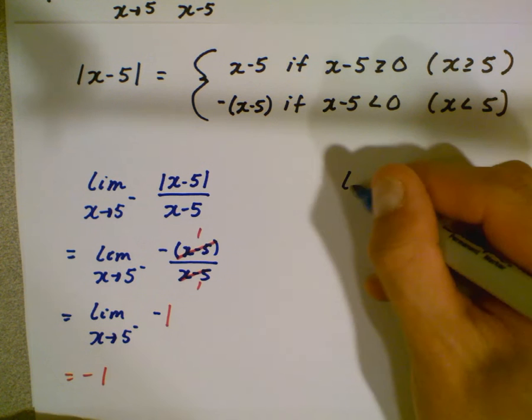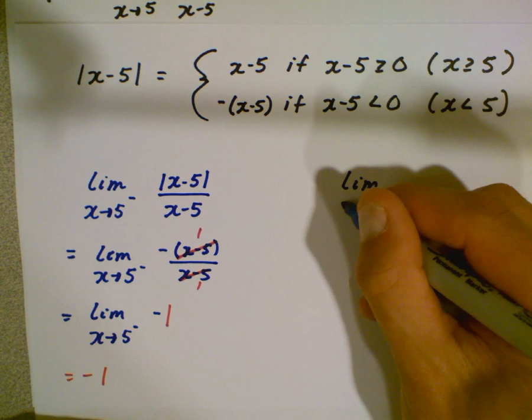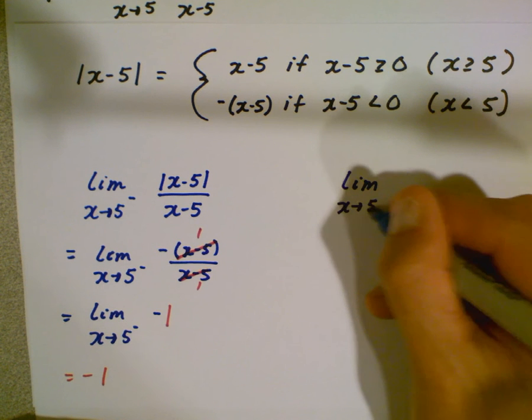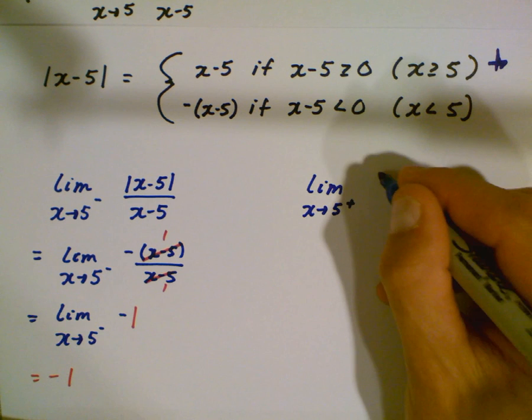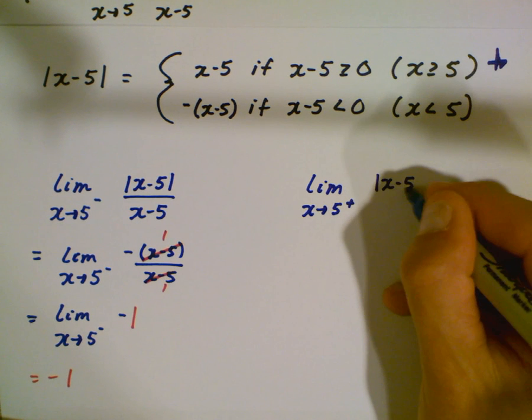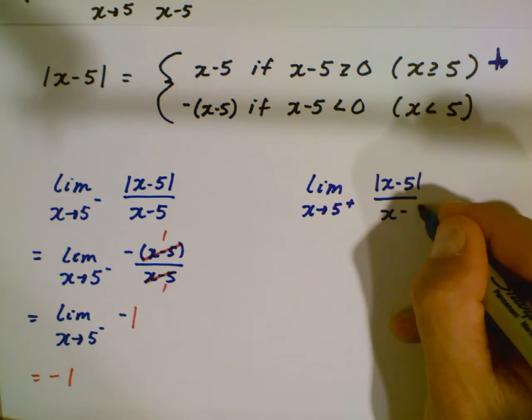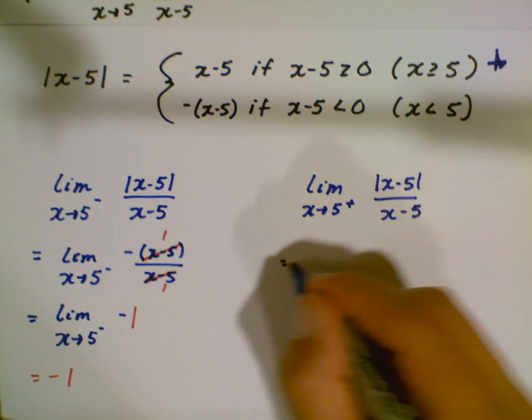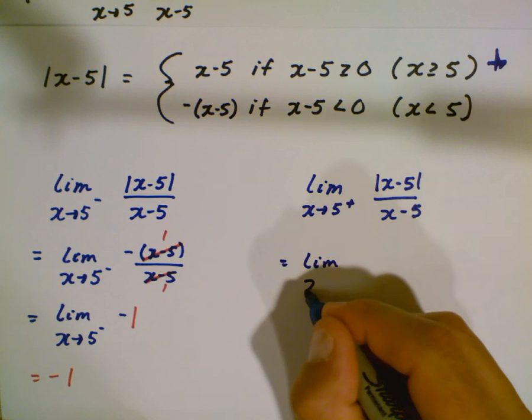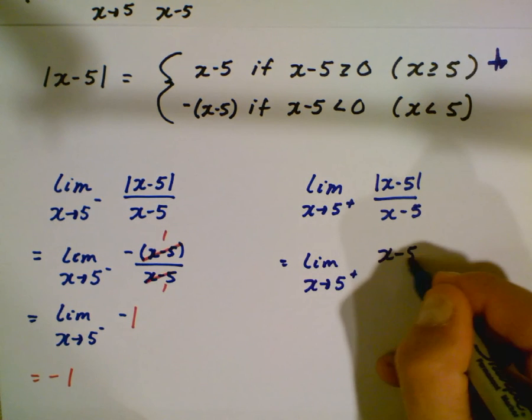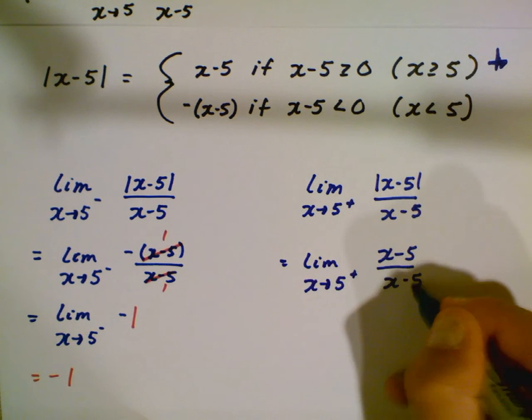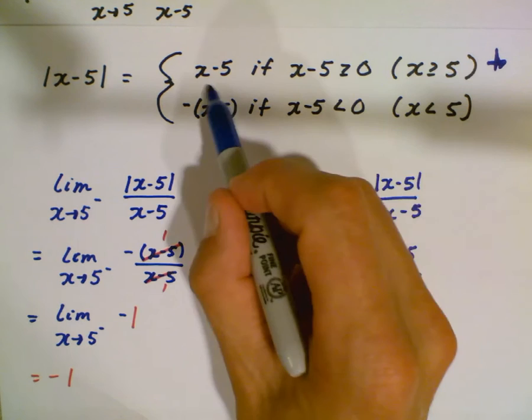We have to actually approach 5 from the positive side, from the right. So as x approaches 5 from the right, that means we're going to be using this portion. You're going to have the original, I'm just rewriting the original here. And if I simplify this I'm going to have the limit as x is approaching 5 from the right of just x minus 5 over x minus 5 using this definition up here.